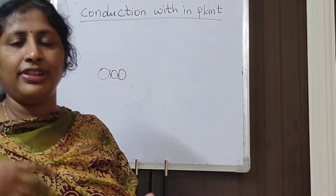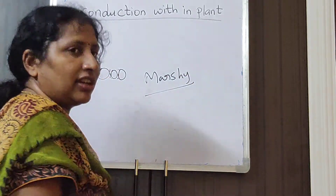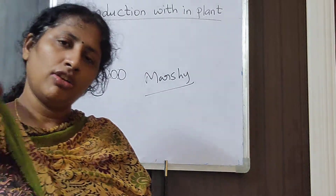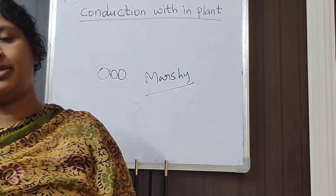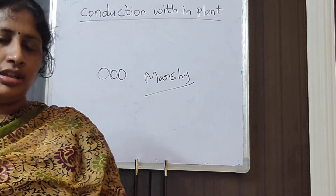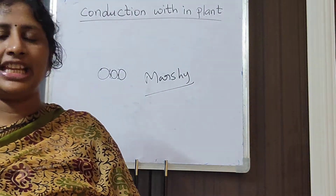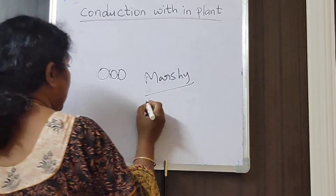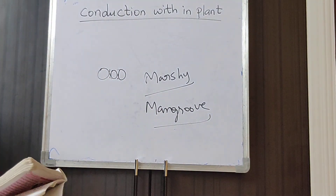What happens if plants are growing in marshy areas — very wet areas? In marshy areas, the soil particles are filled with water. So how can the roots carry out respiration? How does respiration take place in plants growing in marshy areas? We know about mangrove plants — you have studied them in previous classes. How does respiration take place in mangrove plants?